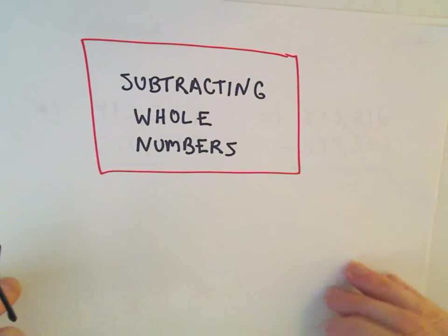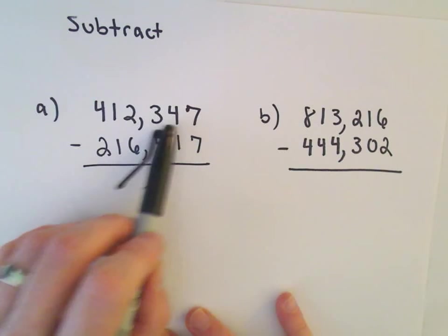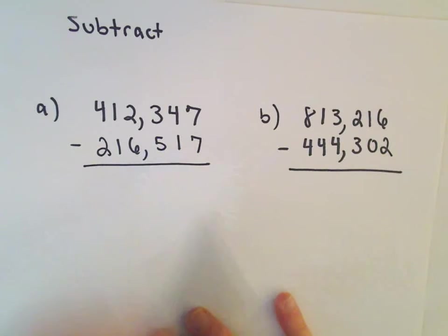Alright, so here I'm going to look at another example of subtracting whole numbers. In part A we have 412,347 minus 216,517. I'm going to do that one first.